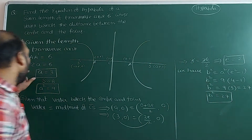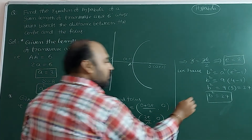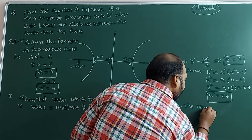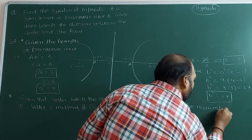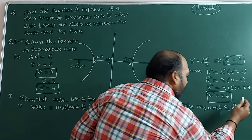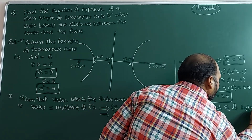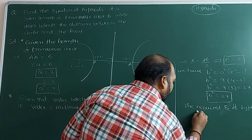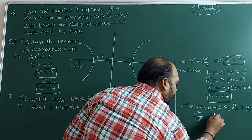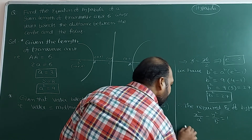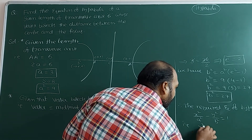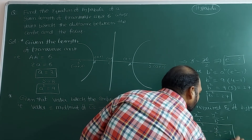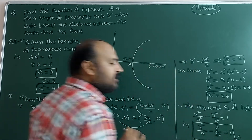With a² = 9 and b² = 27, the required equation of hyperbola is x²/a² - y²/b² = 1. That is, x²/9 - y²/27 = 1. No need to simplify — we can leave it like this.